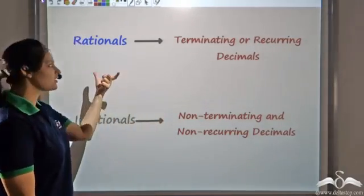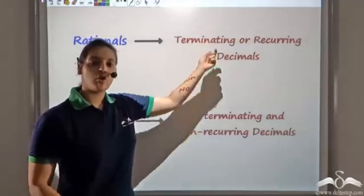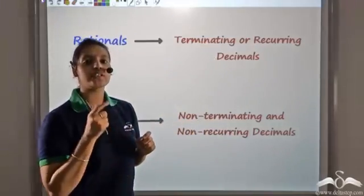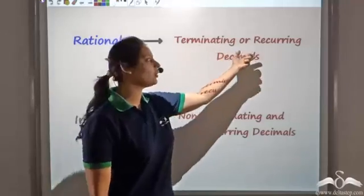We have seen that if we represent rational numbers in decimals, they either terminate or after the decimal you see a sequence of digits that repeat. So they are either terminating or recurring.